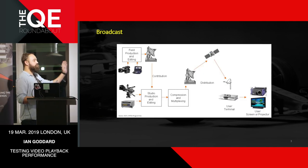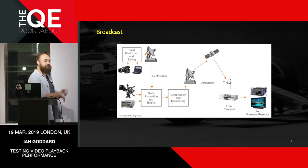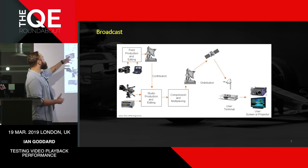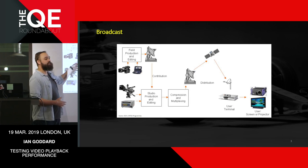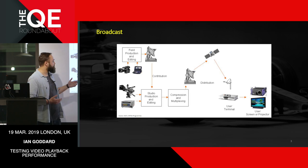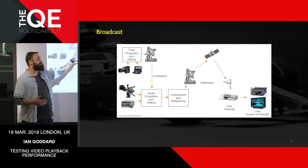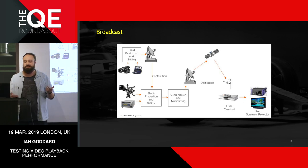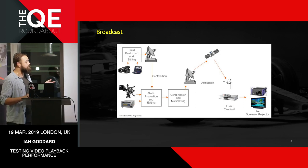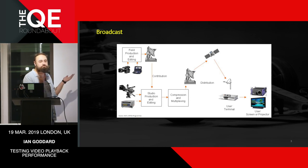This is an old-fashioned broadcast workflow, probably very familiar to most of you. We used to do the production in the field, maybe some editing there, then it would come through to the studio for more editing, make it look polished. You'd compress it, multiplex it, and distribute it — in this case, via satellite network to your set-top box, your IDTVs or projectors. The same workflow applies for terrestrial television or cable.